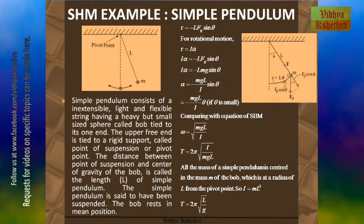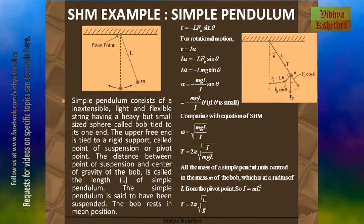Comparing this equation with that of simple harmonic motion, we arrive at omega equal to the square root of mgl by I, and the time period T equals 2π by omega, which gives 2π times the square root of I by mgl. Since all the mass of a simple pendulum is centered in the mass m of the bob at a radius l from the pivot point, the moment of inertia I equals m times l squared. Substituting this, the time period of a simple pendulum is T equals 2π times the square root of l by g, where l is the length and g is the acceleration due to gravity.